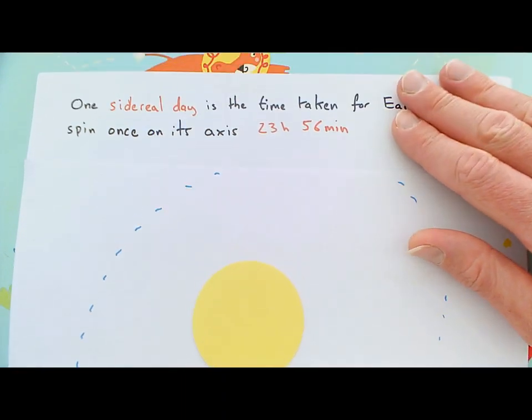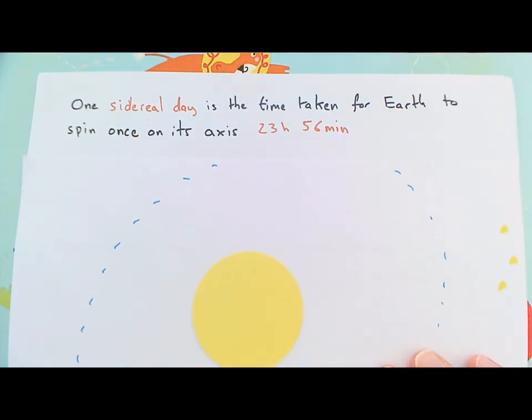So there's some notes there to jot down for a sidereal day. One sidereal day is the time taken for the earth to spin once on its axis: 23 hours, 56 minutes. We can work that time out by looking at the distant stars and knowing how long does it take me to face that same star again. It takes 23 hours and 56 minutes. That's a sidereal day.